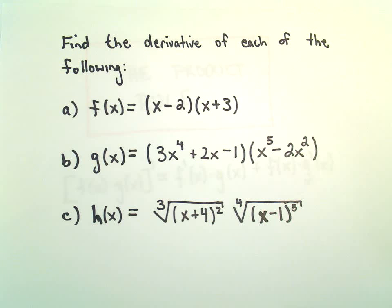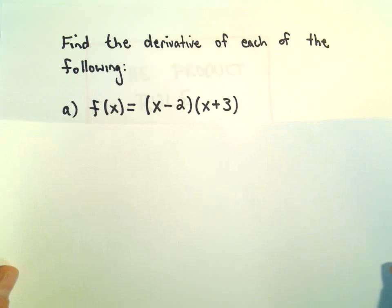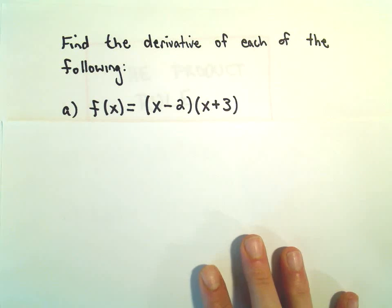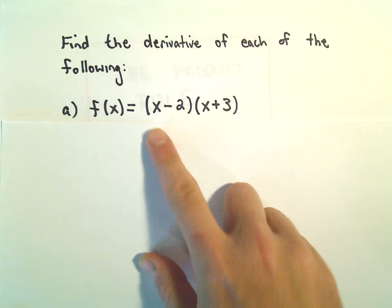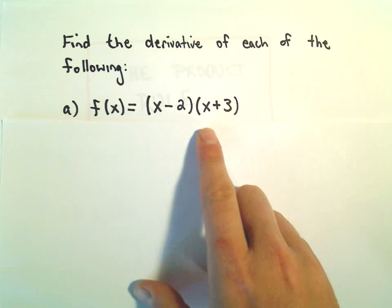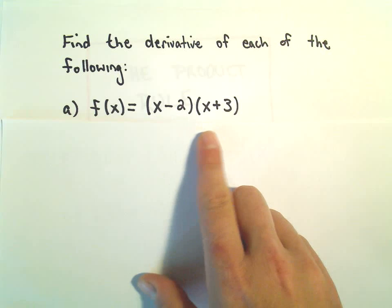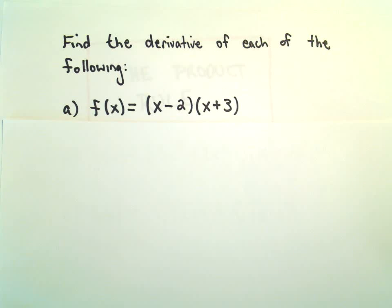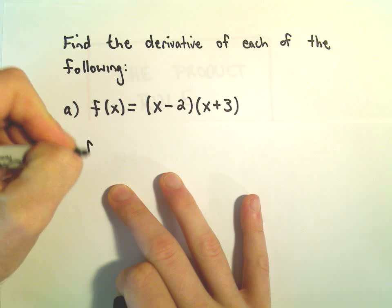In part a we have f(x) equals (x-2) times (x+3). Now normally what I would do before, if I were going to take the derivative of this function, I would actually probably multiply it out first, combine my like terms, and then take the derivative. But just to illustrate this product rule.